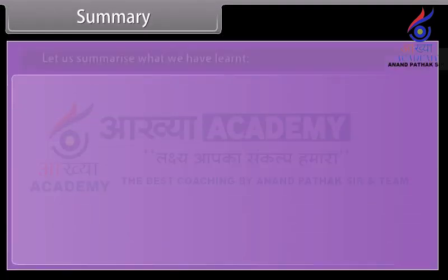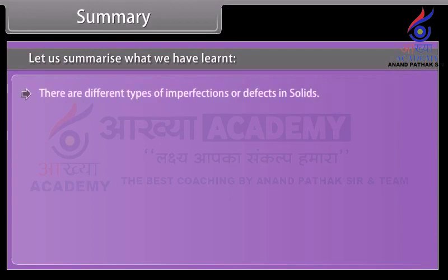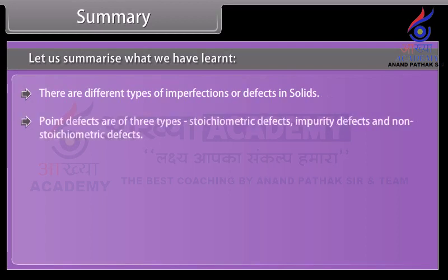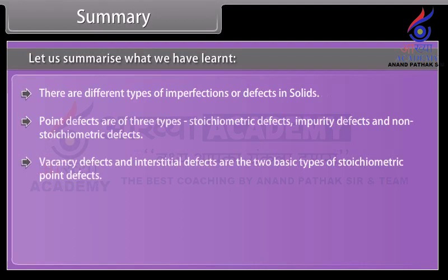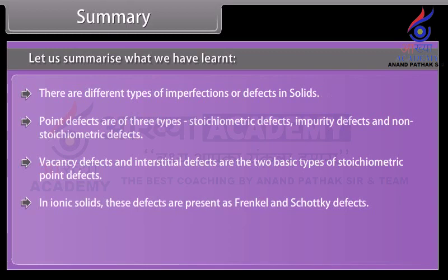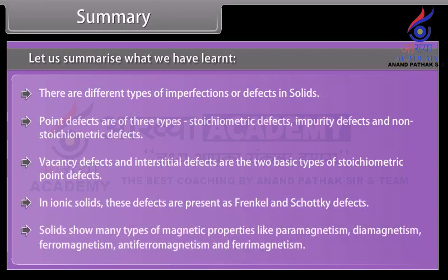Summary: There are different types of imperfections or defects in solids. Point defects are of three types: stoichiometric defects, impurity defects, and non-stoichiometric defects. Vacancy defects and interstitial defects are the two basic types of stoichiometric point defects. In ionic solids, these defects are present as Frenkel and Schottky defects. Solids show many types of magnetic properties like paramagnetism, diamagnetism, ferromagnetism, antiferromagnetism, and ferrimagnetism.